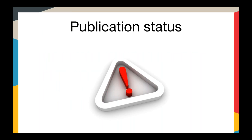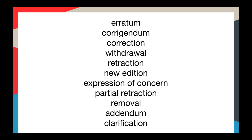The key purpose of Crossmark is to let readers know if there are any changes to the status of a particular publication. Many things can happen to content after it's been published — it can be corrected, updated, retracted, or even withdrawn. These things can happen soon after publication, but also months or sometimes years after. Crossmark ensures there's a consistent and reliable way for readers to be notified of these important changes.